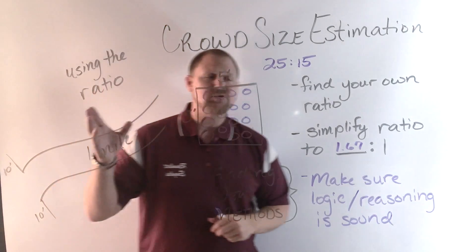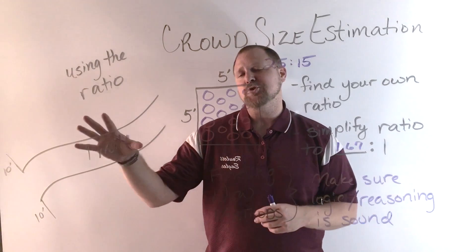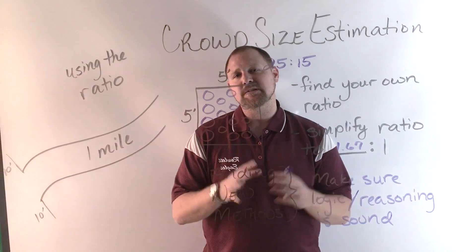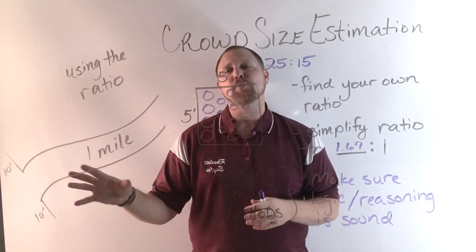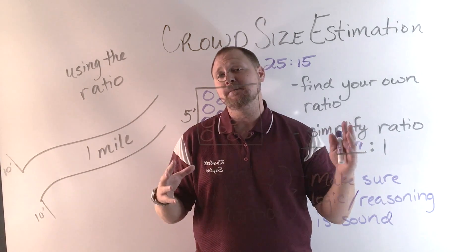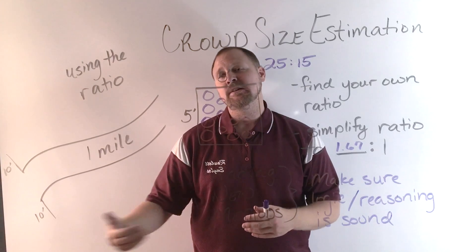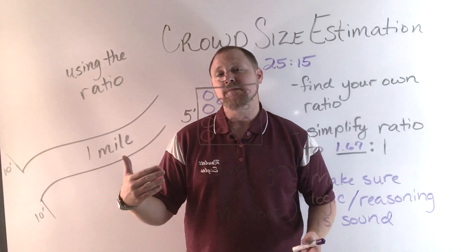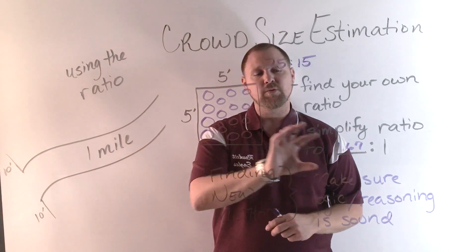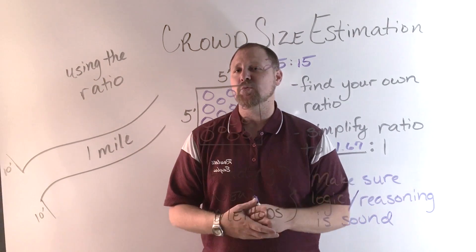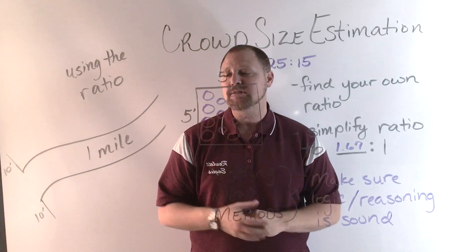Then we're going to use that ratio. We have several little problems. The major problem in this section is that we have a parade route that goes for a mile down the street, and on either side of the street people can stand 10 feet from the edge of the street. So we want to use the ratio we just got, or maybe the one the book or the worksheet assigns to this problem.